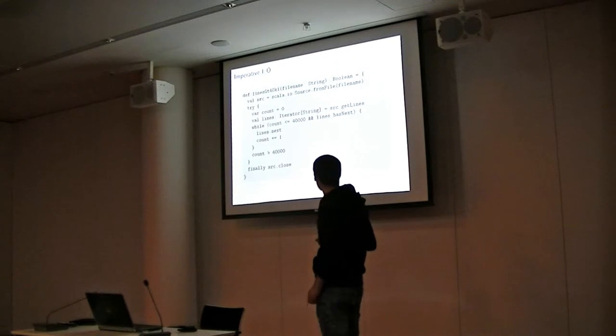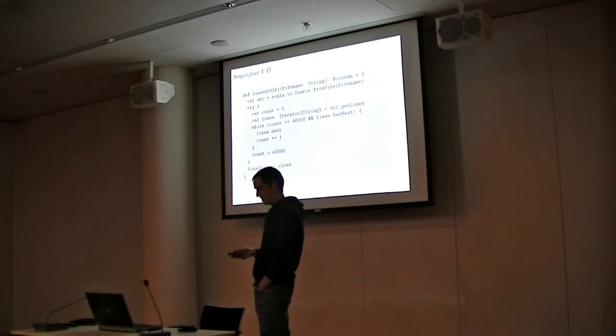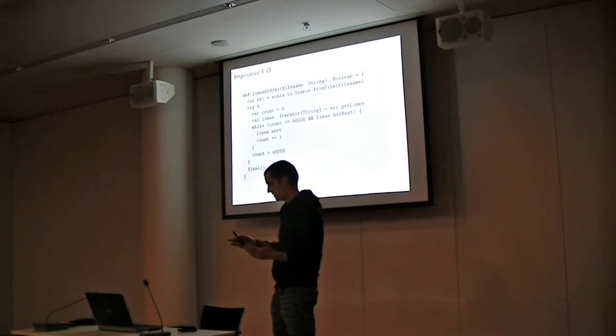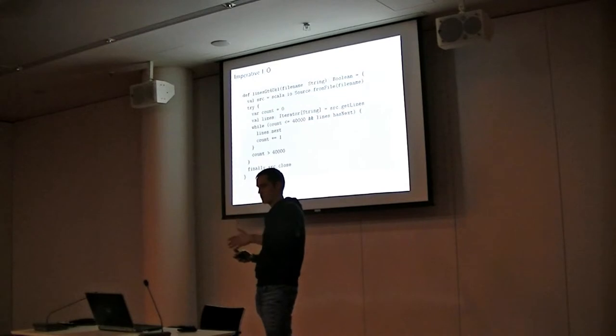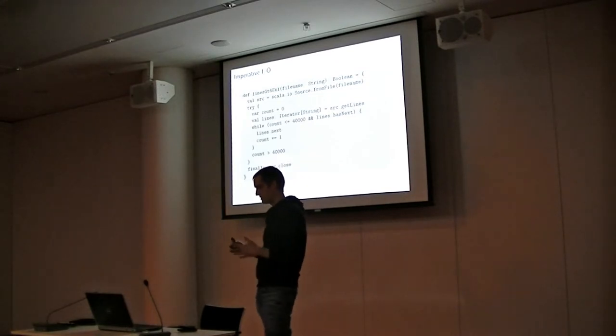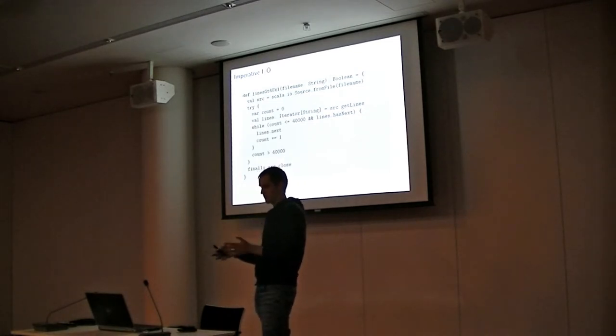But it also has shortcomings. One is that you have to close the file yourself. If you forget this, you have a resource leak. The other bad thing is you have this while loop, and in this while loop there are two concerns: one is that you are going over the lines of the file, and the other is that you count the lines. These are two different concerns and they are not separated. The third bad thing is you can't compose this—you can't take this out and append it to another operation which also works on the lines of the file.